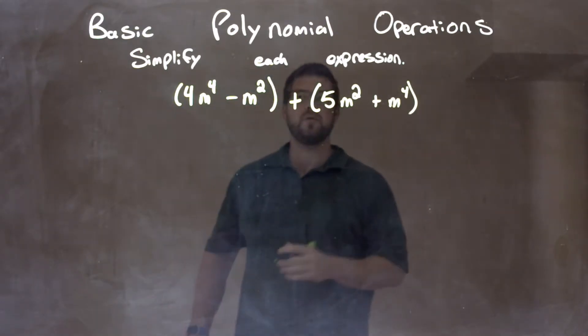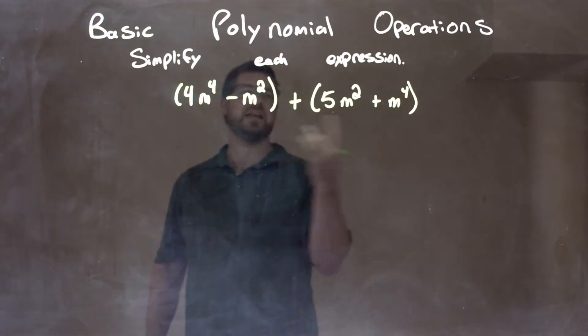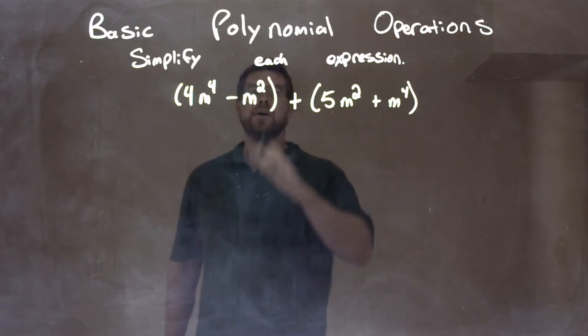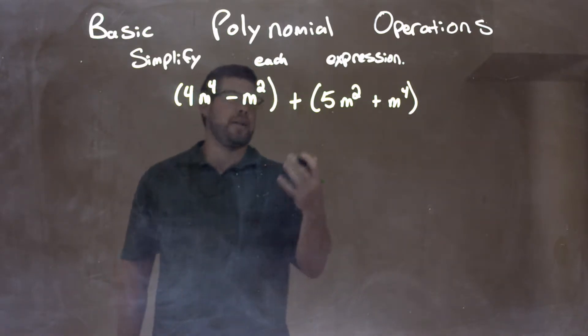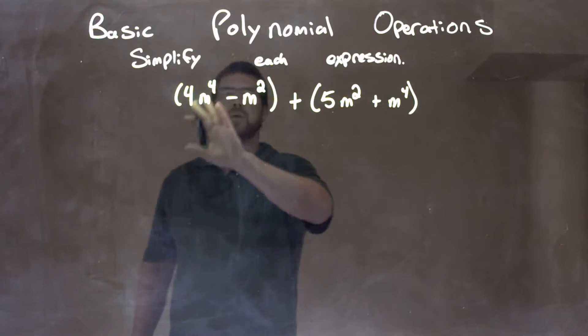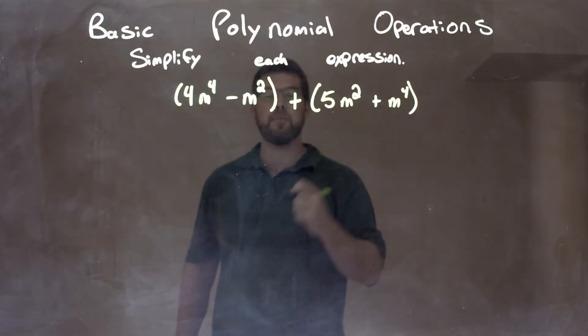What I want to do is I need to combine our like terms. First thing is always I look within each parenthesis. Nothing to combine in each one. So we can imagine the parenthesis are gone now. We simplified as much as we could inside the parenthesis. Now, let's combine our like terms.